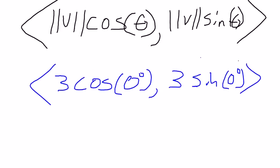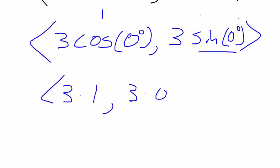Alright, well, cosine of 0 is the x value at 0. Well, that's going to be 1, so this value would be 3 times 1. Sine of 0 is the y value at 0 degrees, and that would be 0, so this would be 3 times 0. So my answer then would be 3, 0. Okay, so that's number 67.